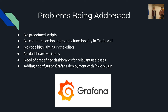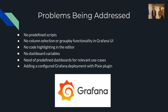Some of the problems from that design were that there were no predefined scripts. Users would have to manually type out Pixel scripts for whatever kind of data they wanted to visualize. Another issue was that there was no column selection or group-by feature that Pixie has, but users that use Grafana wouldn't have those features in their UI.